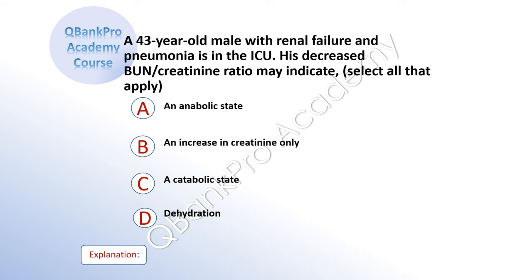A 43-year-old male with renal failure and pneumonia is in the ICU. His decreased BUN and creatinine ratio may indicate. Select all that apply. A: an anabolic state. B: an increase in creatinine only. C: a catabolic state. D: dehydration.